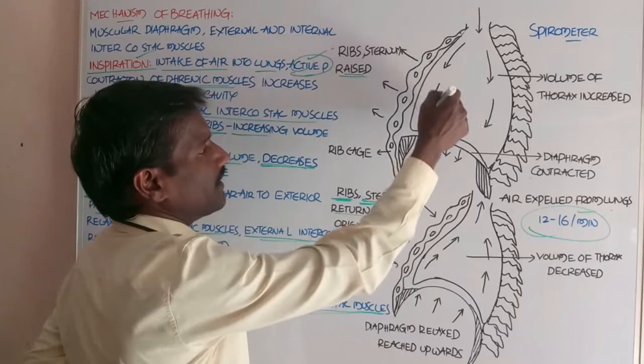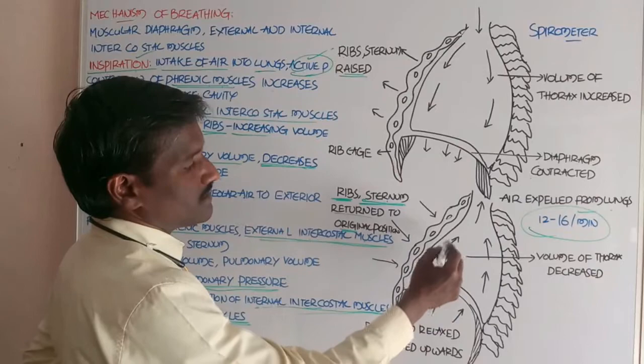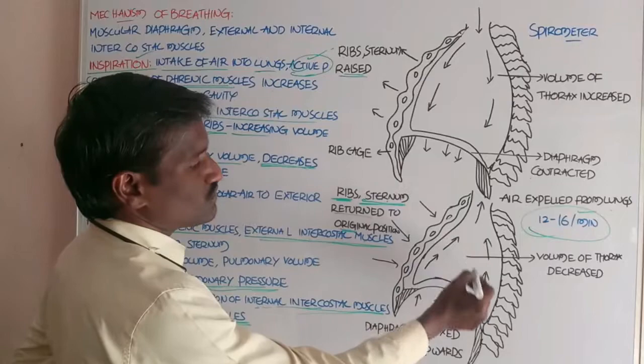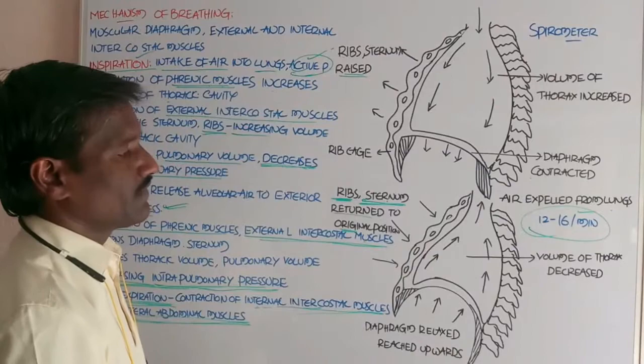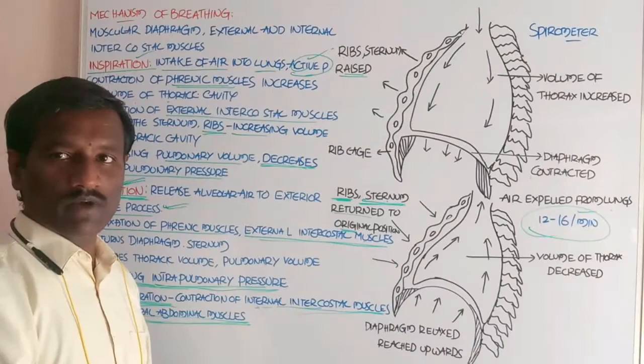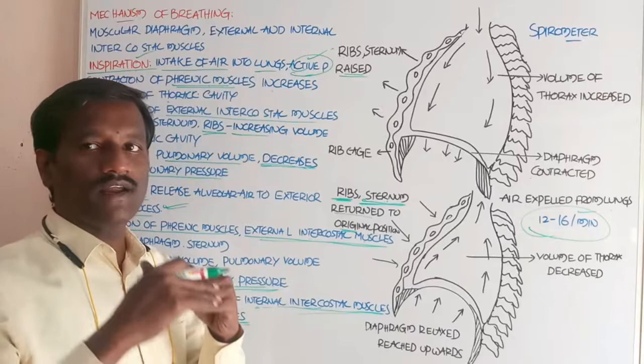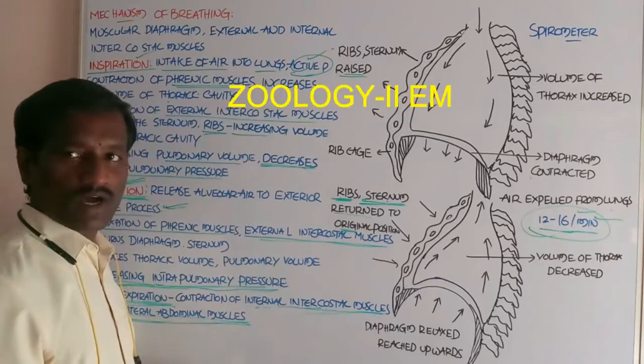The arrow marks in the diagram show the entry of air into the thoracic cavity or lungs during inspiration, and the exit of air from the lungs to the outside during expiration. A healthy adult human being breathes approximately 12 to 16 times per minute.